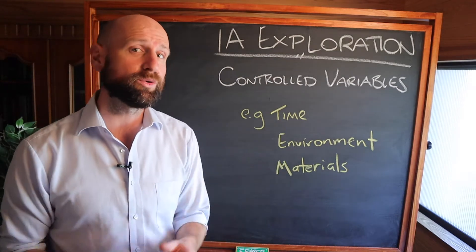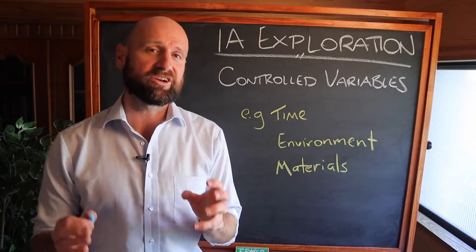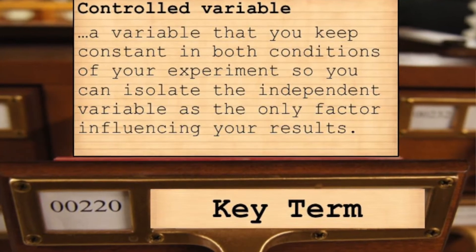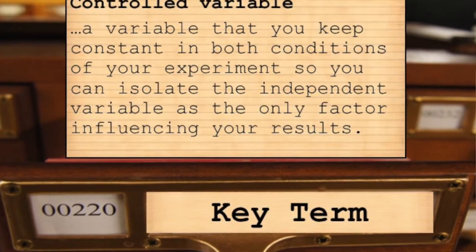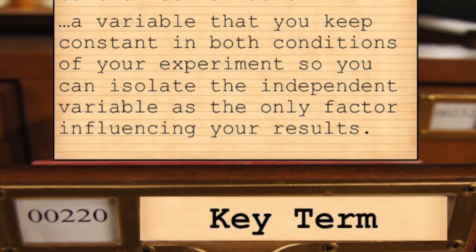G'day IB Psychologist. A real quick video here, how to explain your controlled variables. A controlled variable is a variable that you keep constant in both conditions of your experiment so you can isolate the independent variable as the only factor affecting your results.